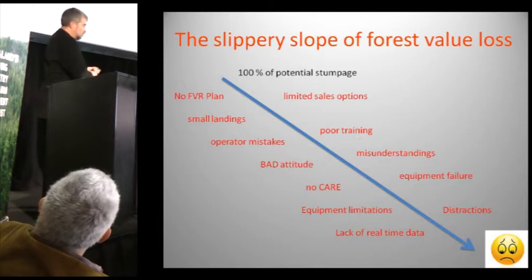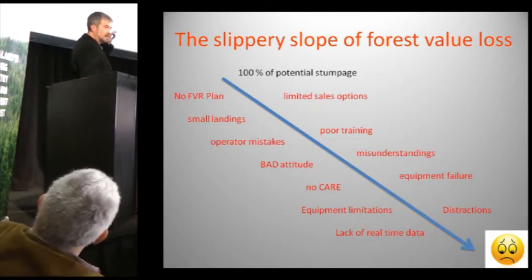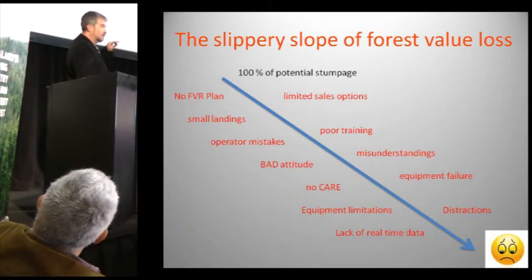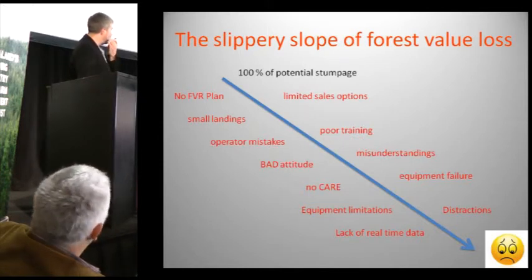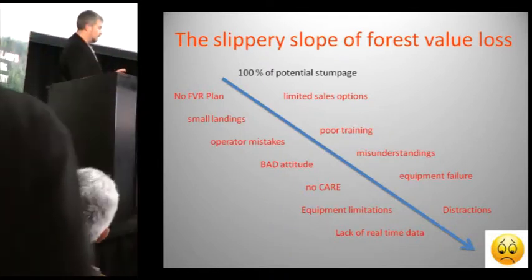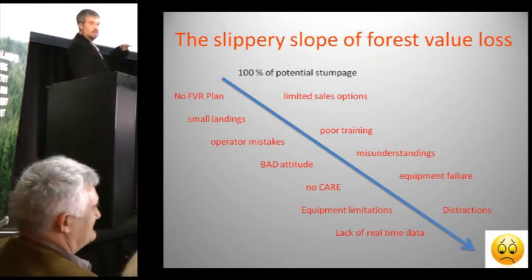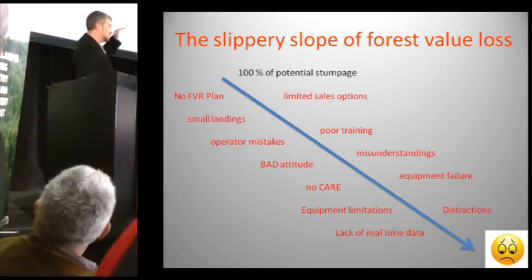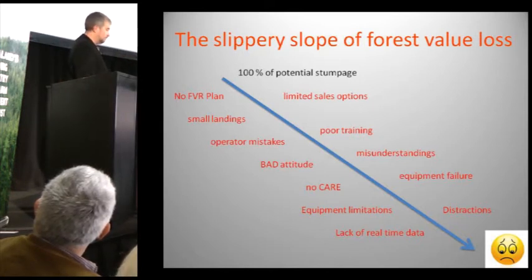The slippery slope of value loss: if we talk about 100% of potential value that stands in your forest — the actual log grades that are available to be cut — we start to look at the ways that you begin missing out on that value, and there are a number of them. From your 100% that's available in the forest, the only way is down. Each error, lack of planning, or lack of integrity around what happens in the harvest process takes you away from that 100% of potential volume and value.